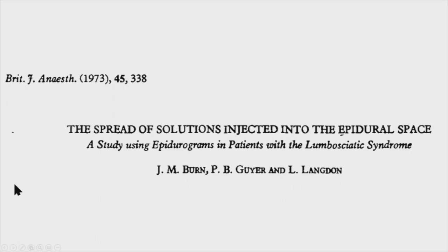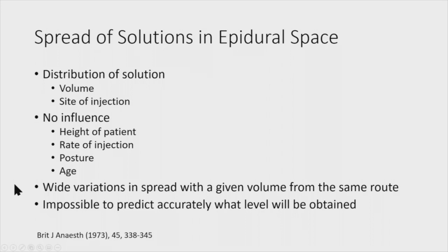Regarding the spread of solutions in the epidural space — this is another reason we decided to advance the catheter all the way up. This is a very old study I found in the British Journal of Anesthesiology. They looked at the distribution of solution based on the volume injected and the site of injection. There was no influence from the height of the patient, the rate of injection, the posture of the patient, or the age of the patient. However, there was wide variation in spread for a given volume for the same route, making it impossible to accurately predict what level would be reached.